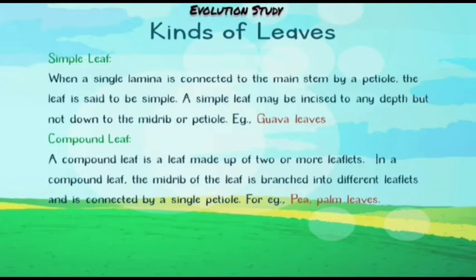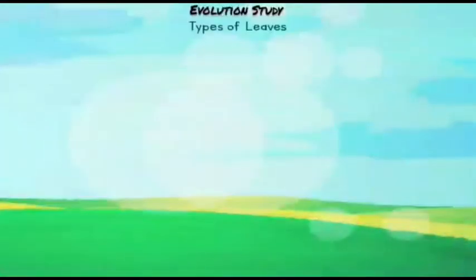For example, guava leaves. Now what is a compound leaf? A compound leaf is a leaf made up of two or more leaflets. In a compound leaf, the midrib of the leaf is branched into different leaflets and is connected by a single petiole. For example, pea or palm leaves.